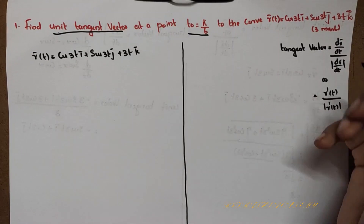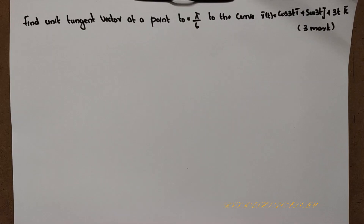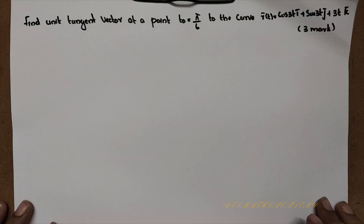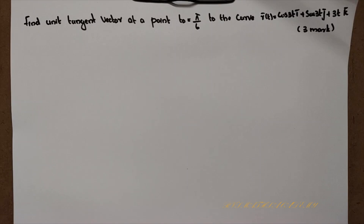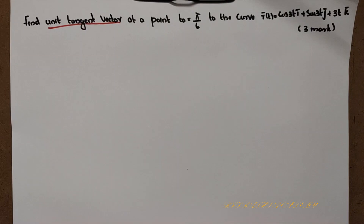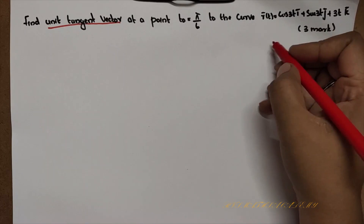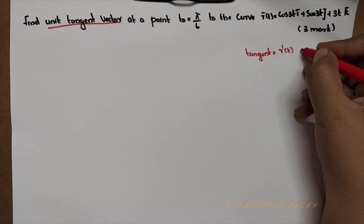The tangent vector formula is dr/dt. First question: find the unit tangent vector at the point t₀ equal to π/6 to the curve r(t) equal to cos3t·i plus sin3t·j plus 3t·k. There are three steps to find the unit tangent vector at the point t₀.